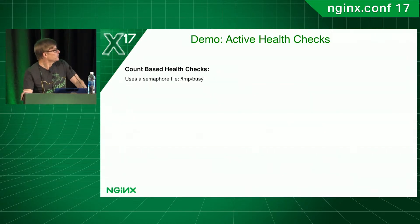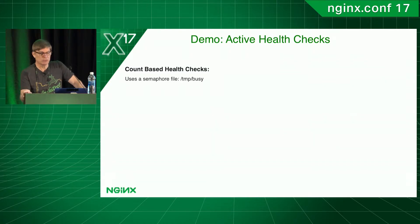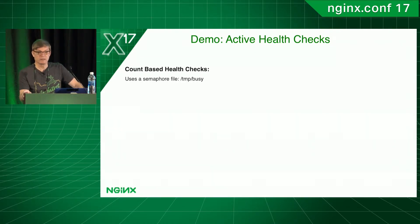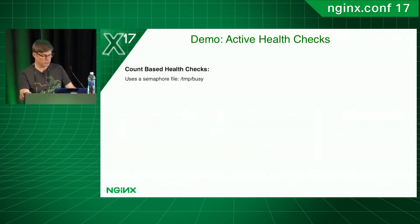For the count-based health check, I'm using a simple semaphore file. When a request is received, the application creates the file /tmp/busy. The health check looks for the existence of that file — if it sees it, it marks the server unhealthy. When the application finishes, it removes the file. The health check now sees the file is gone and the server comes back to health. Very straightforward, very simple.